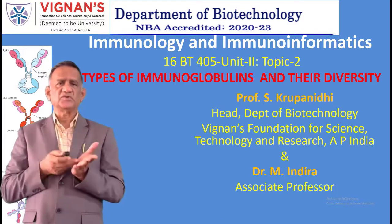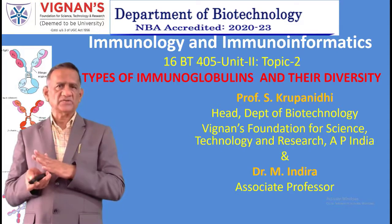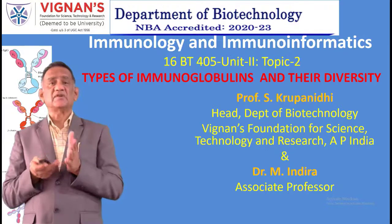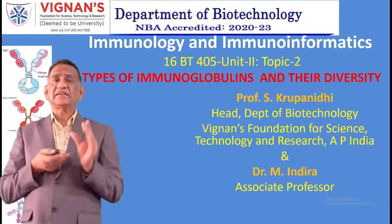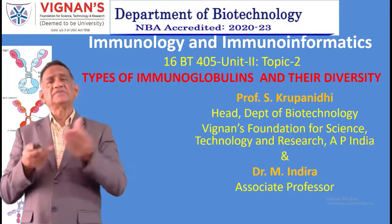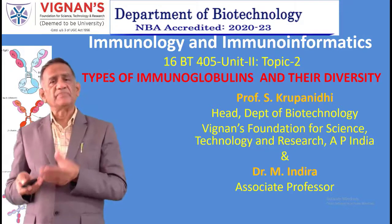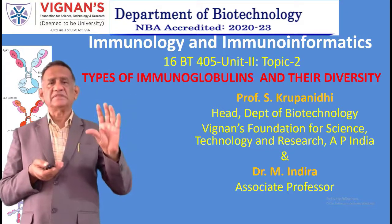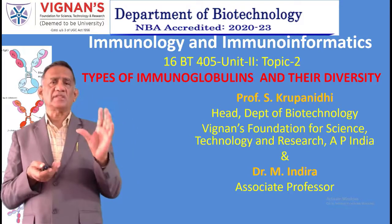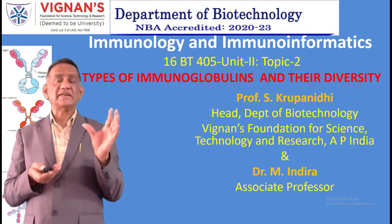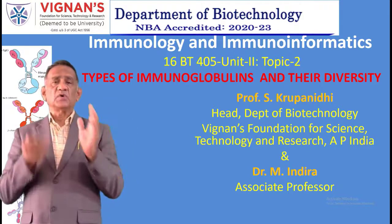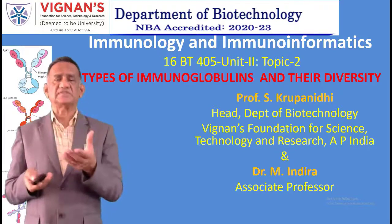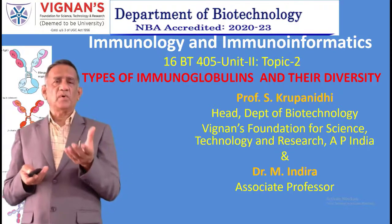The light chain is 25,000 daltons and heavy chain is 50,000 daltons. Light chain has 212 amino acids and heavy chain has 450 amino acids. Light chain has the Fab region and heavy chain has the CH3 region. The Fab region is the one that binds to the antigen, and it contains hypervariable regions called complementarity determining regions (CDRs).